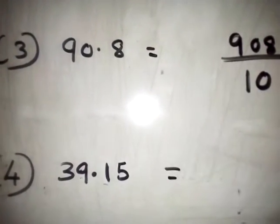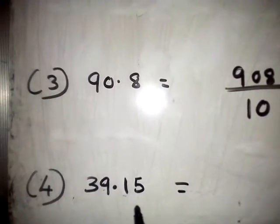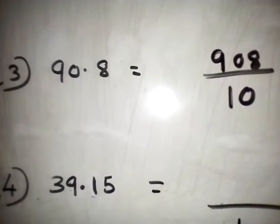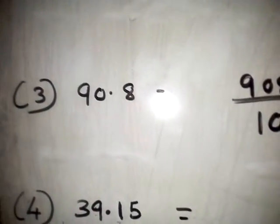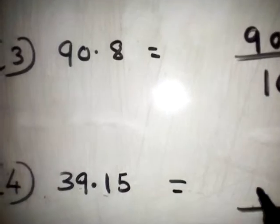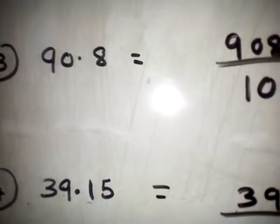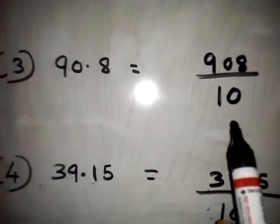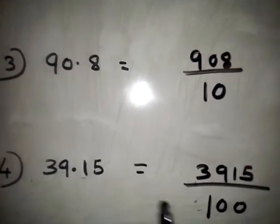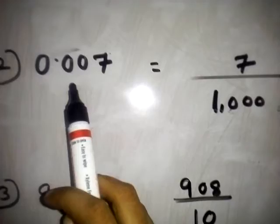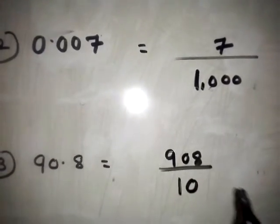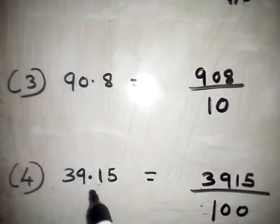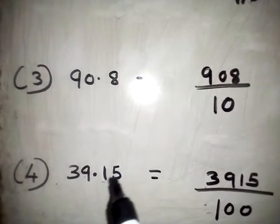Fourth one also. How many decimal places are there? 2 decimal places. So the denominator is 100. Write this number without the decimal point. Remember students: if 1 decimal place is there, denominator is 10; if 2 decimal places, denominator is 100; if 3 decimal places, denominator is 1000. And afterwards write the given question number in the numerator without the decimal point.